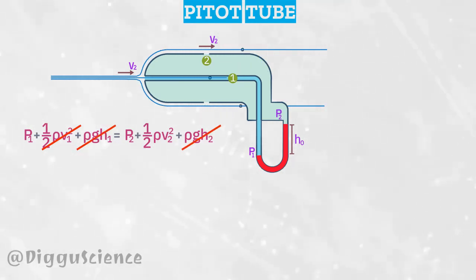This equation becomes p1 = p2 + 1/2 ρv2². To simplify it, v2 = √(2(p1 - p2)/ρ).